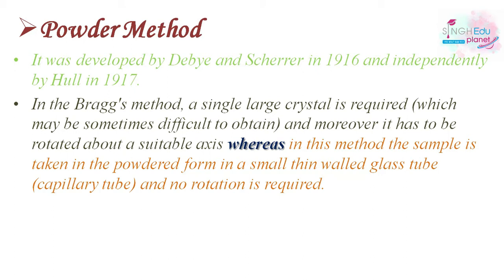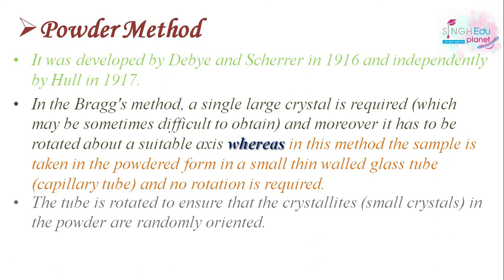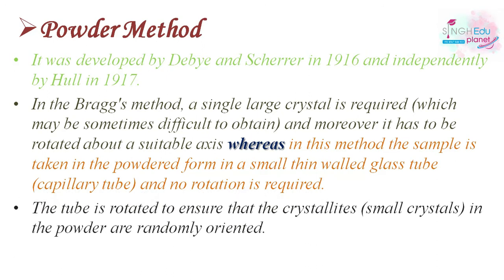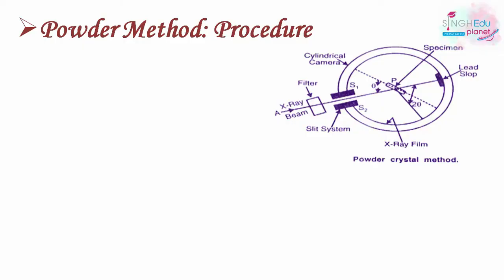In the powder method, we take a sample in powder form placed in a small thin-walled glass tube. We don't need rotation like in Bragg's method. Instead, we take the crystal in powder form so that the small crystals are randomly oriented in all directions, covering all possible orientations.